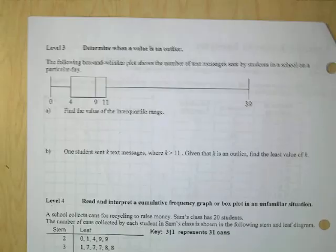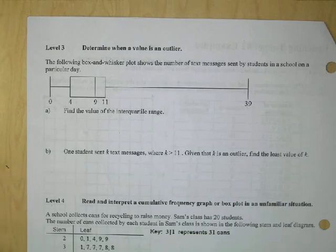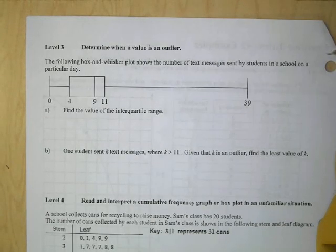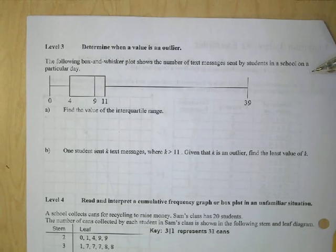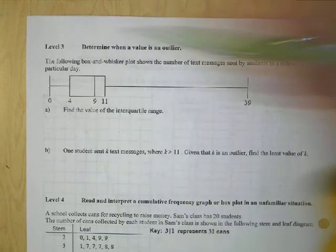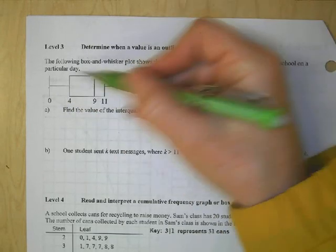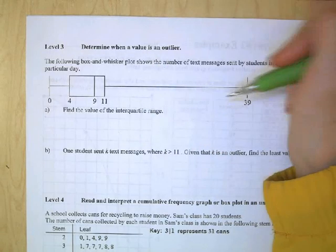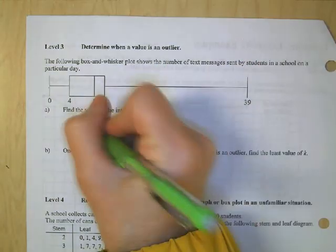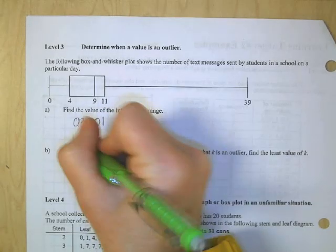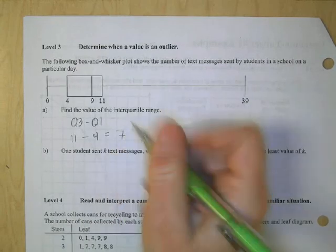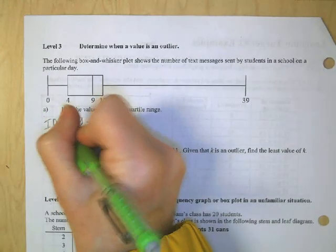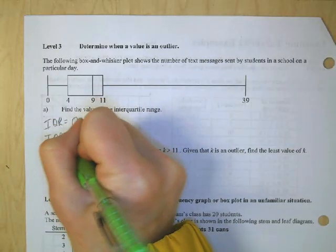A box and whisker plot shows the number of text messages sent by students on a particular day. The minimum is zero, maximum is 39, and most values fall within 4 to 11. Find the interquartile range: Q3 minus Q1 = 11 minus 4 = 7. So IQR = 7.